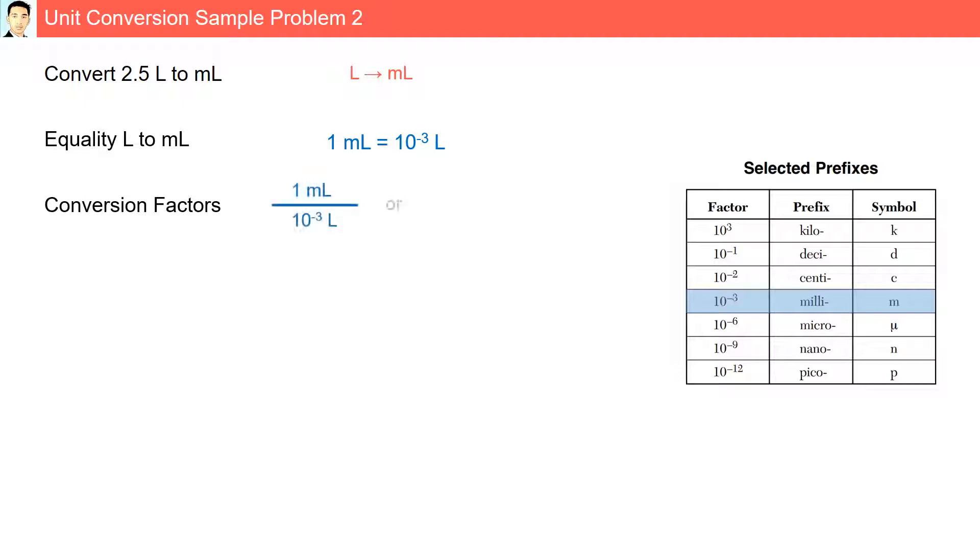Conversion factors. Here are our two conversion factors. And we are going from 2.5 liters into milliliters. Therefore, we will select the conversion factor that has milliliter at the top. Here we have 1 milliliter over 10 to the minus 3rd liters. 2.5 divided by 10 to the minus 3rd milliliter. 2.5 times 10 to the 3rd milliliter is 2500 milliliters.